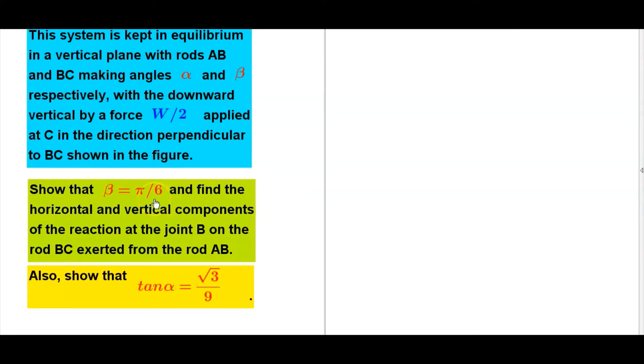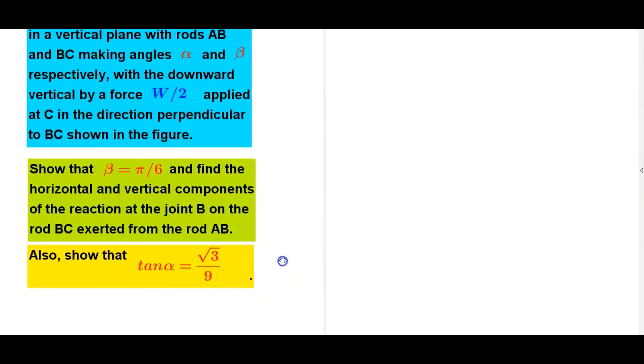Show that beta equals pi by 6 and find the horizontal and vertical components of the reaction at the joint B on the rod BC exerted from the rod AB. Also show that tan alpha equals root 3 over 9.